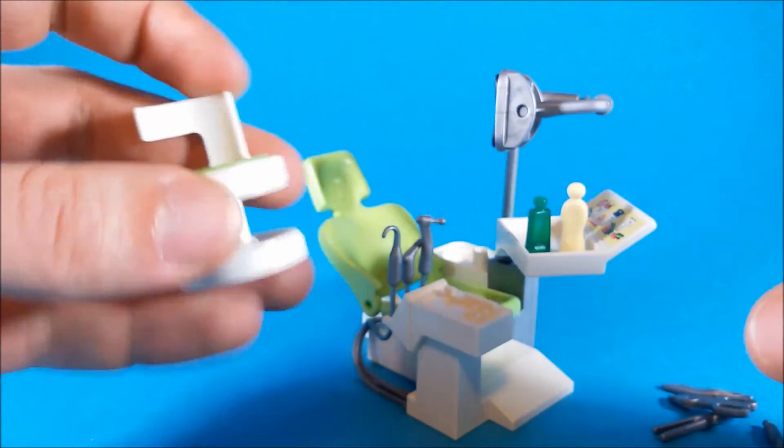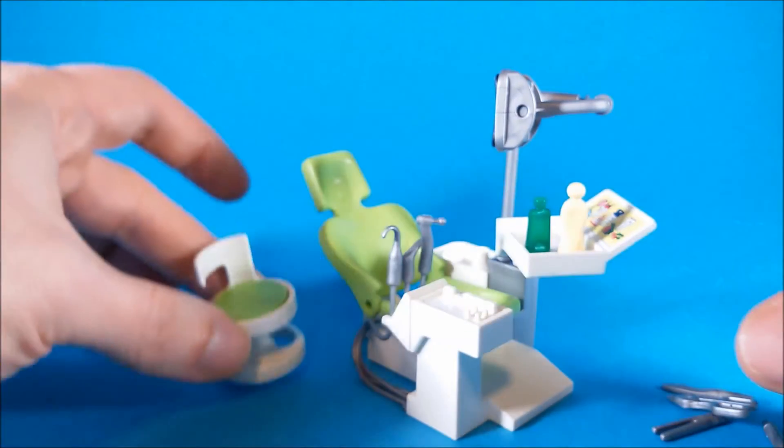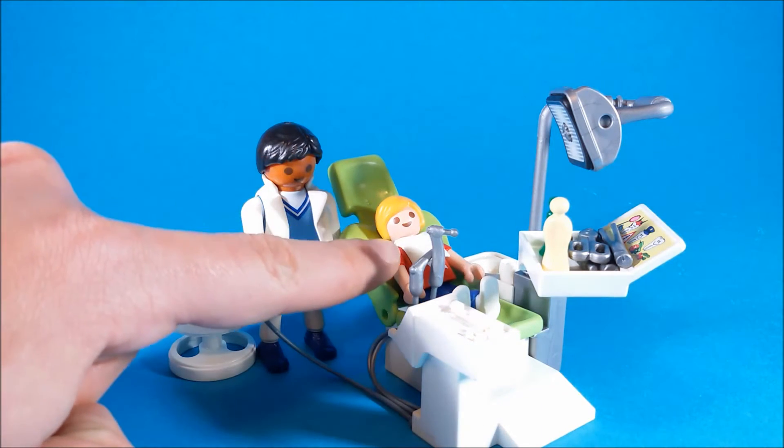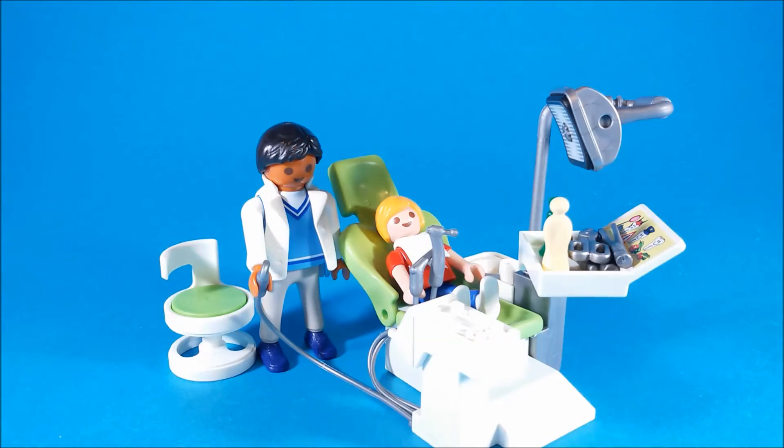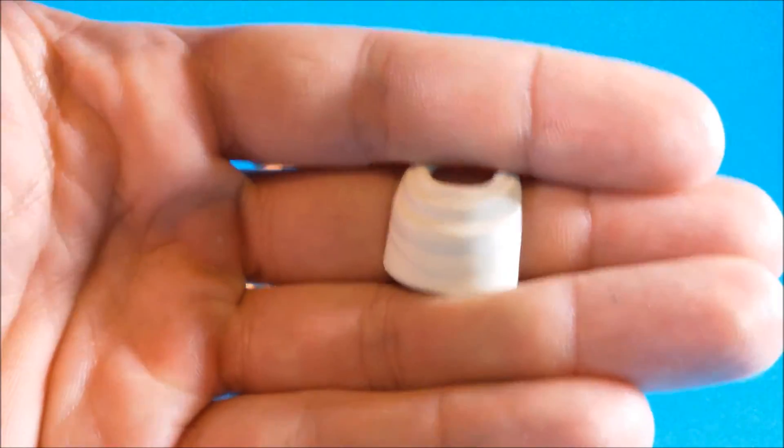And of course, we get an additional chair for our doctor to sit on. Right now, the doctor is visiting a young boy, but he can have also adult patients. In fact, we get one small dentist towel here, which is small-sized, and another one, which is adult-sized, for adult patients.